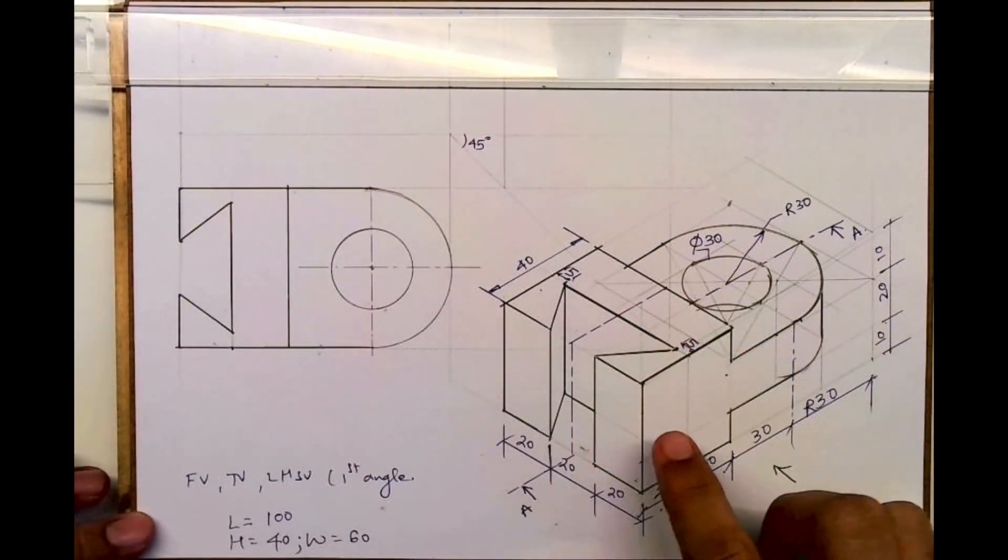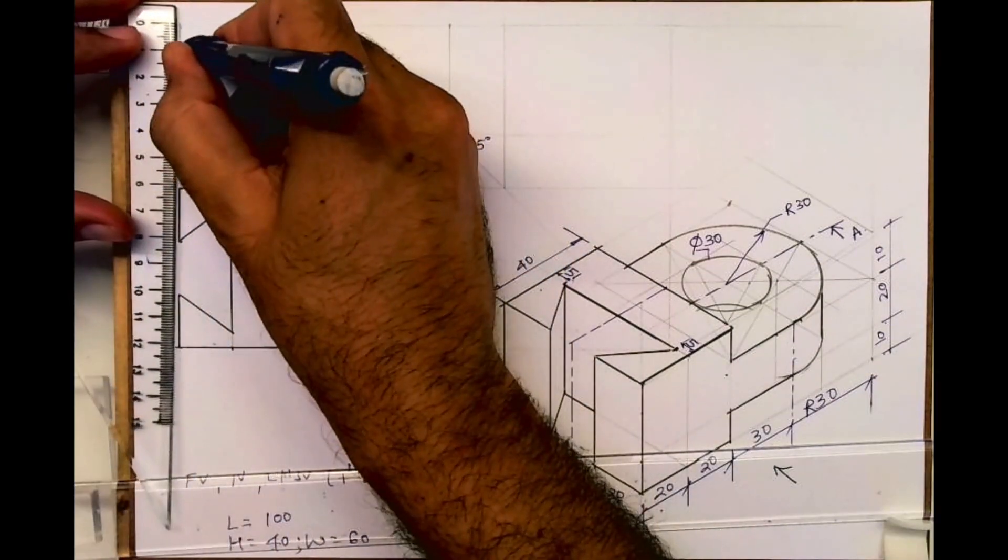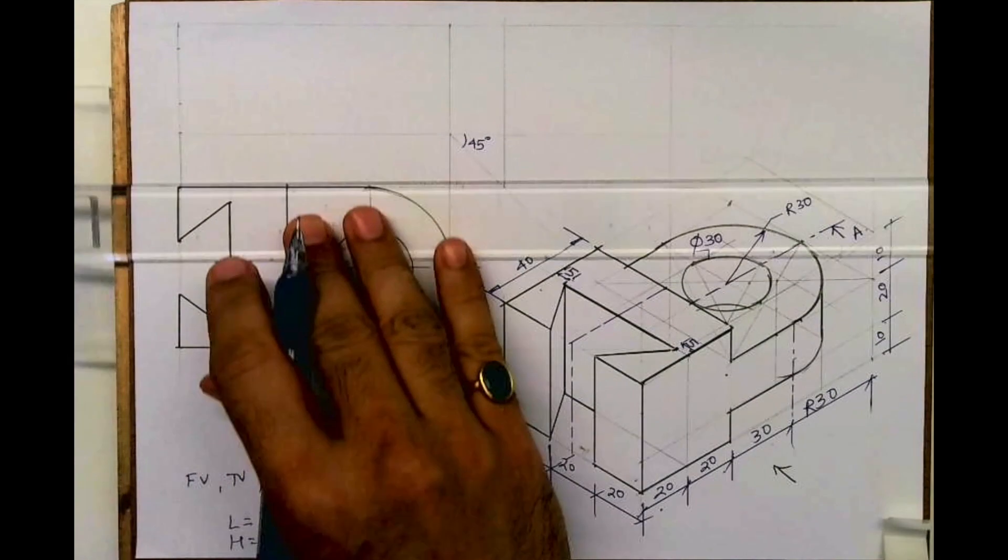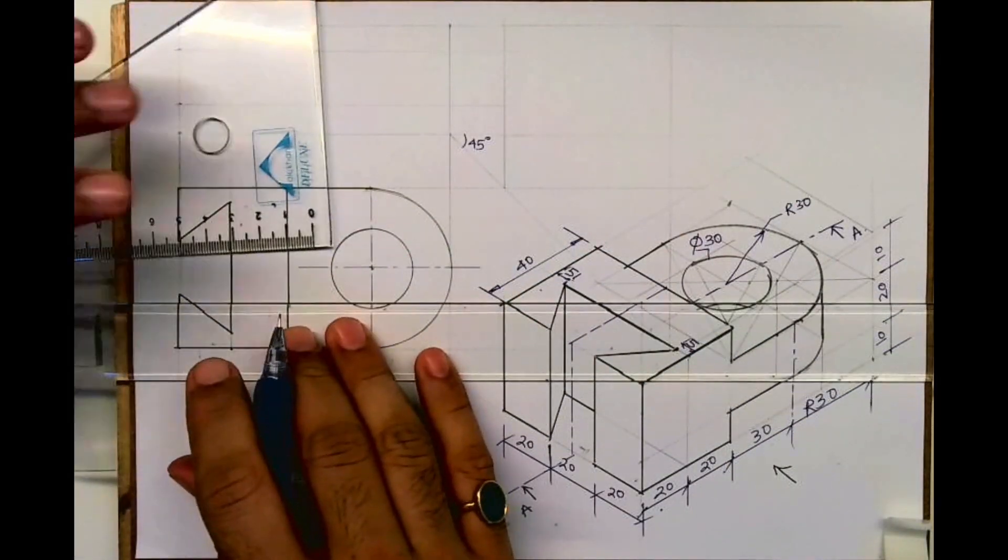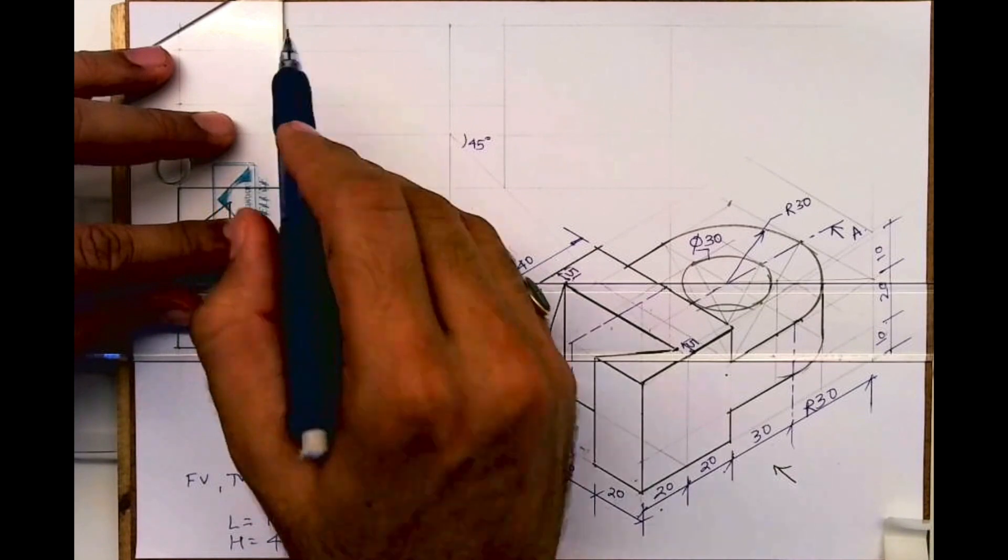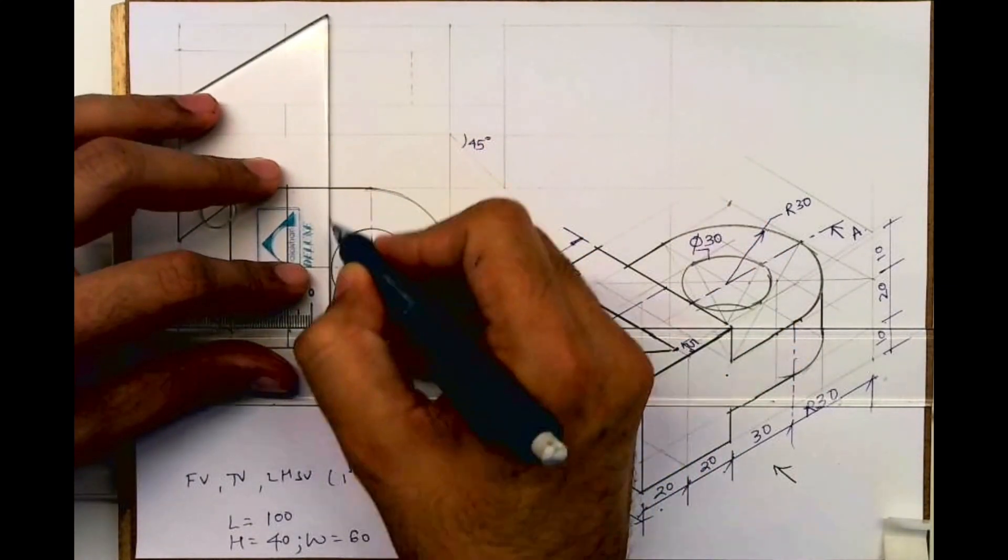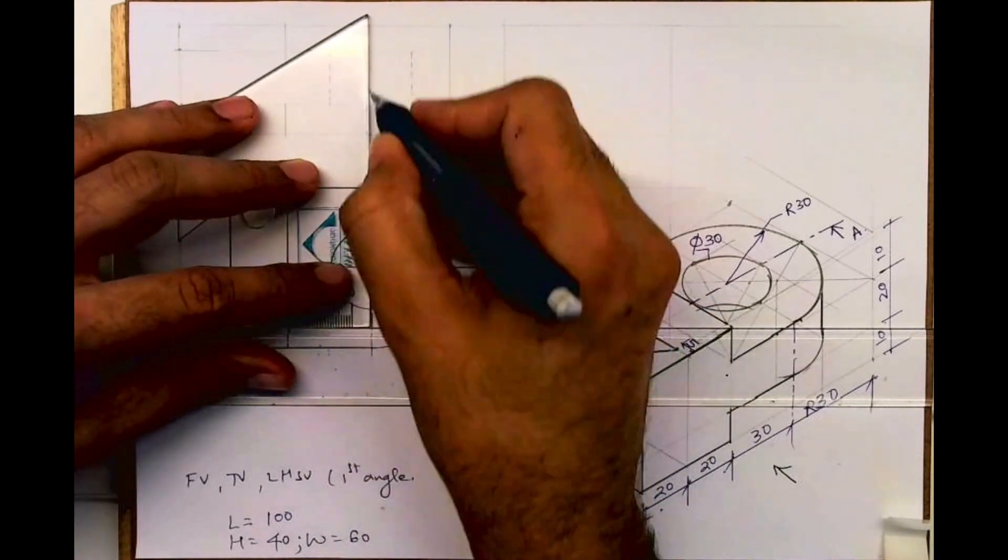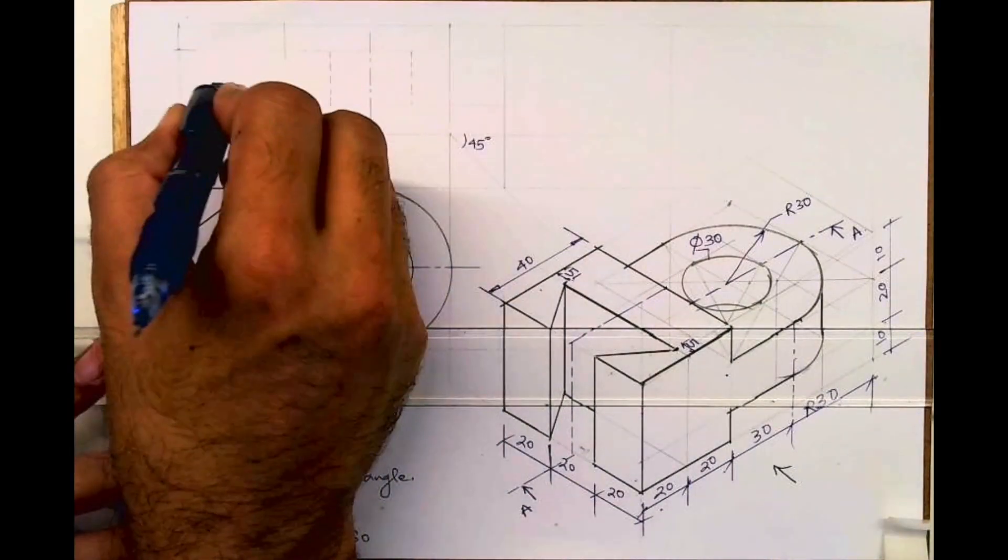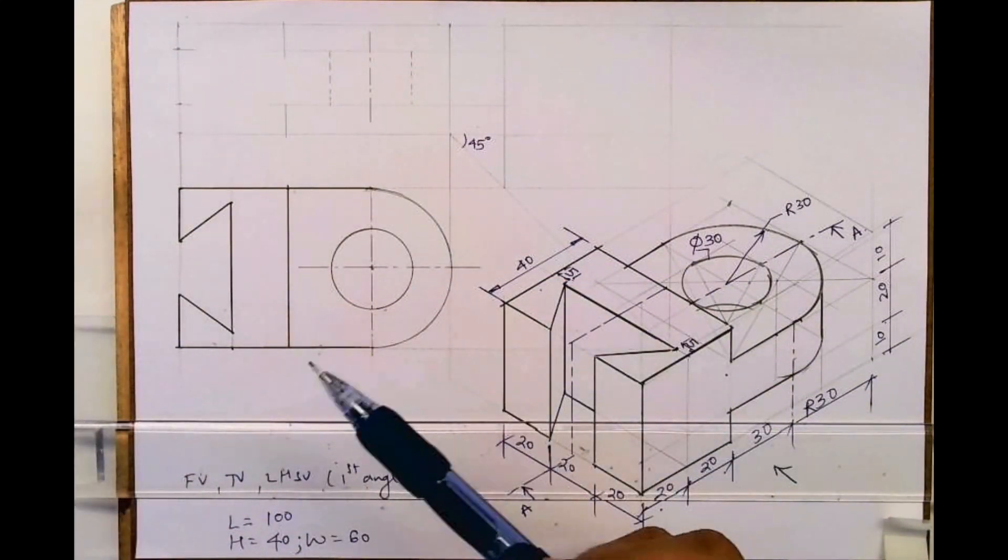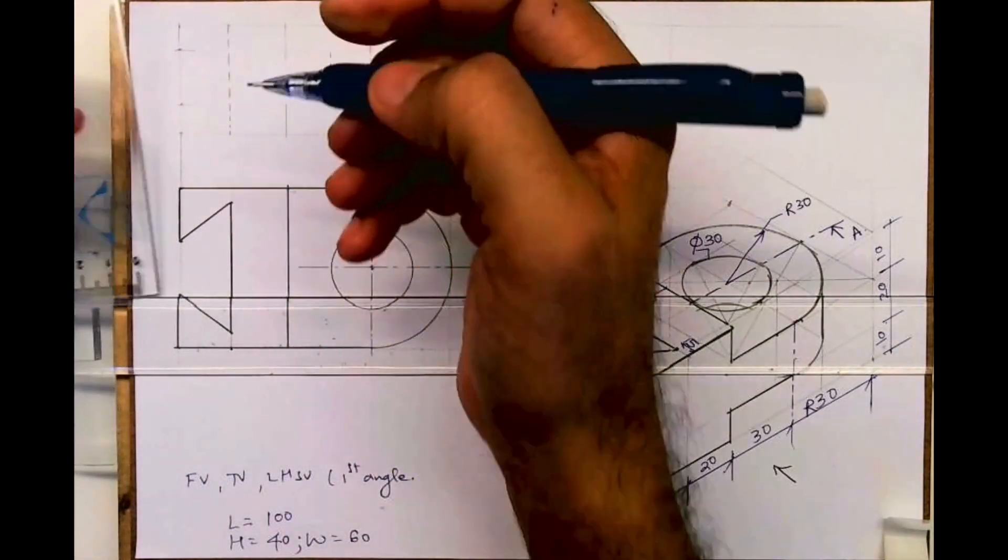Now we will see front view, so 10, 20, 10. And I will be drawing it light because I know I have to do section in this, so I will draw it light. This will be dotted. This will be dotted. This is axis line and there will be one more dotted of this. So I am drawing it purposely light because I know I have to do section in this.